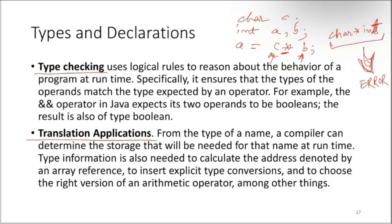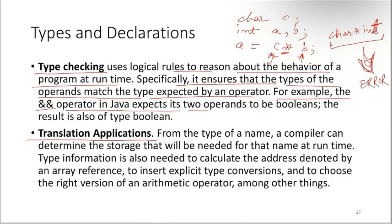Type checking uses logical rules to reason about the behavior of a program at runtime, specifically to ensure that the types of the operands match the type expected by the operator. For example, the ampersand ampersand operator in Java expects its two operands to be boolean, and the result is also of type boolean. In such cases, it definitely happens during runtime, but the example I was giving, this kind of error can be detected in the compilation time itself.